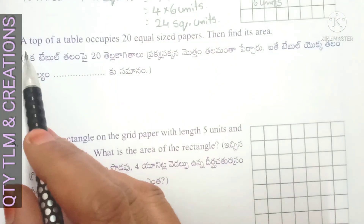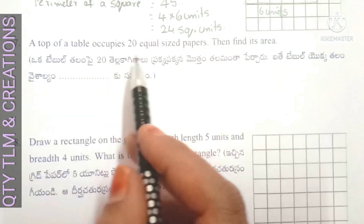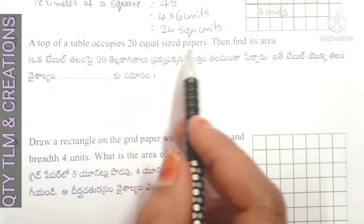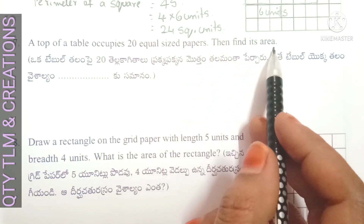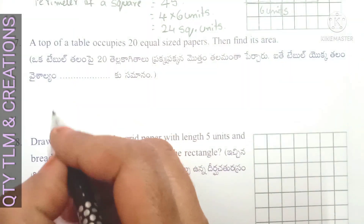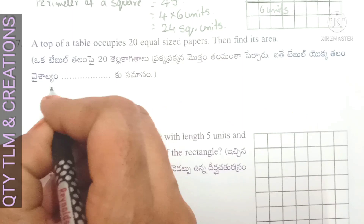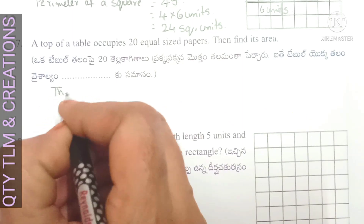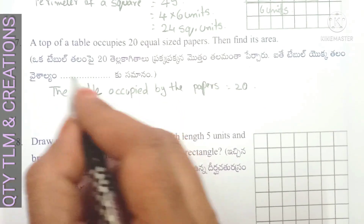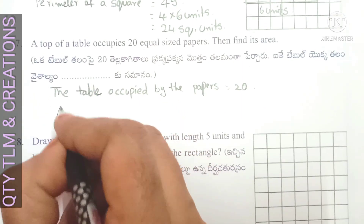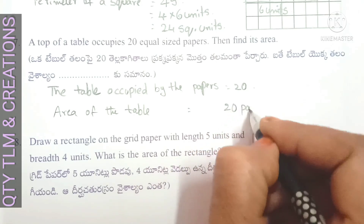Next question: the top of a table occupies 20 equal-sized papers. Find its area. The area occupied by the papers is equal to 20, so the area of the table is 20 square units.